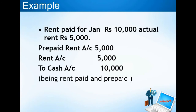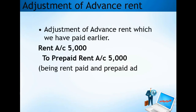After making the January entry, we also need to make the entry for February. In February, the rent is Rs. 5,000 but we do not pay any cash because we have already paid it in advance. So the entry will be: Rent Account debit Rs. 5,000, to Prepaid Rent Account credit Rs. 5,000. We are reducing the prepaid rent asset that was created last month, adjusting the advance payment made earlier.